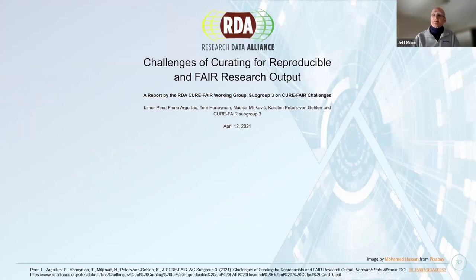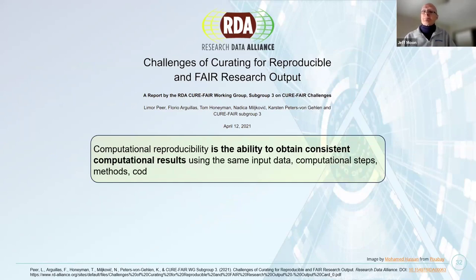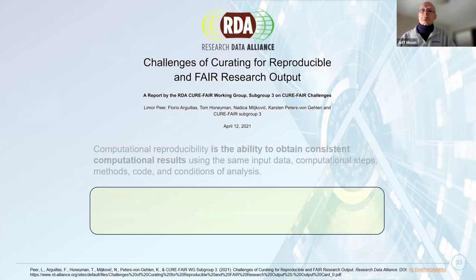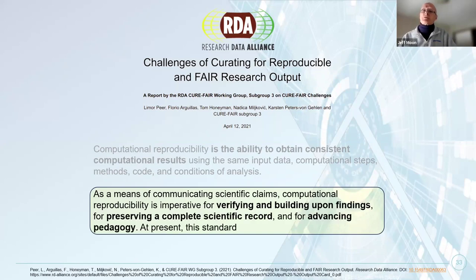The Research Data Alliance is an international organization dedicated to improving research through good data management. In their 2021 report on challenges of curating for reproducible and FAIR research output, they state that computational reproducibility is imperative for verifying and building upon findings, for preserving a complete scientific record, and for advancing pedagogy — and note somewhat ominously that at present this standard is rarely achieved.